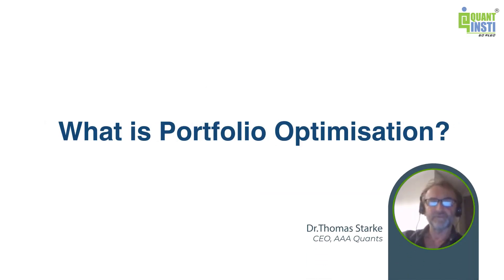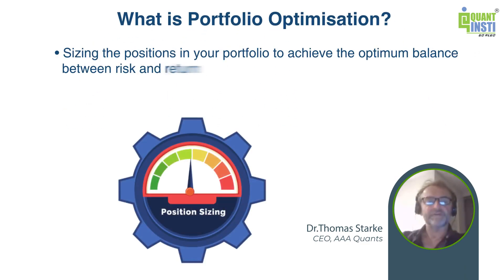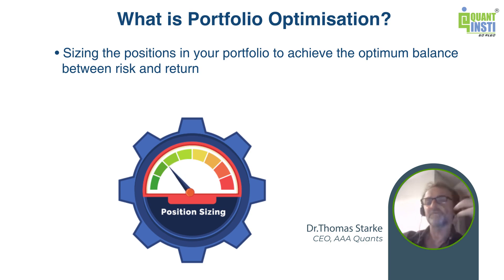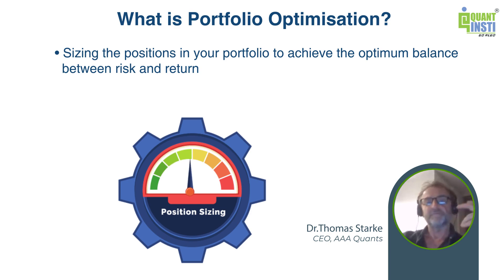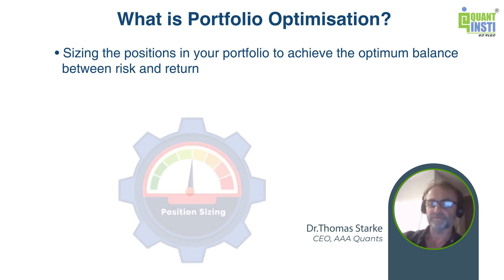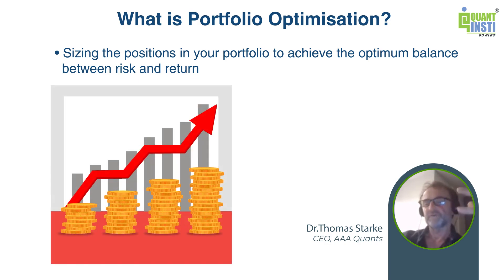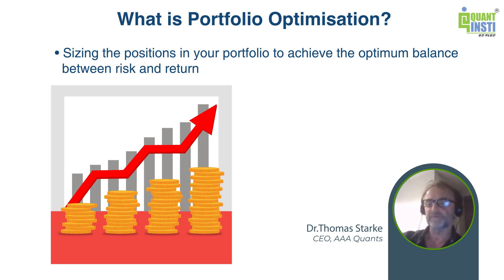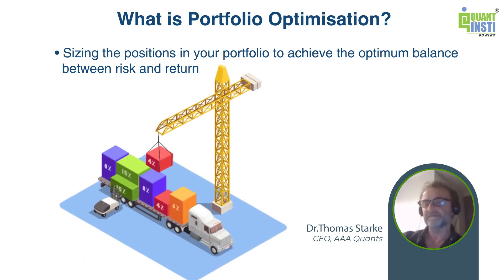Portfolio optimization — what is it? It's actually fairly simple. You size the positions in your portfolio, and in your diversified portfolio, to achieve an optimum balance between risk and return. Return divided by risk is also called the Sharpe ratio, so one aspect of optimal portfolio management is optimizing the Sharpe ratio, or the risk-adjusted return of your portfolio.